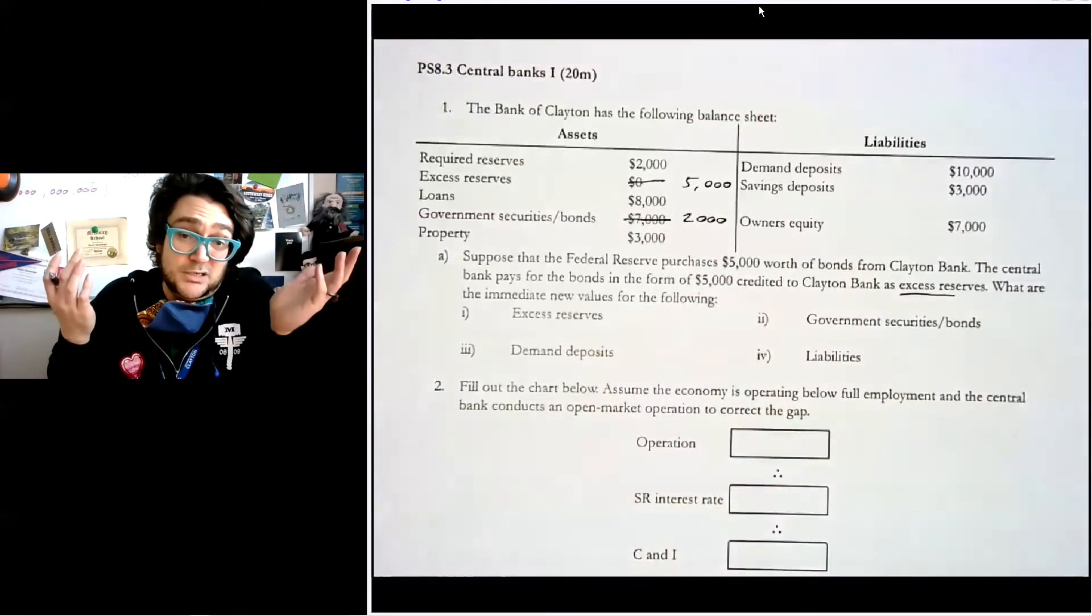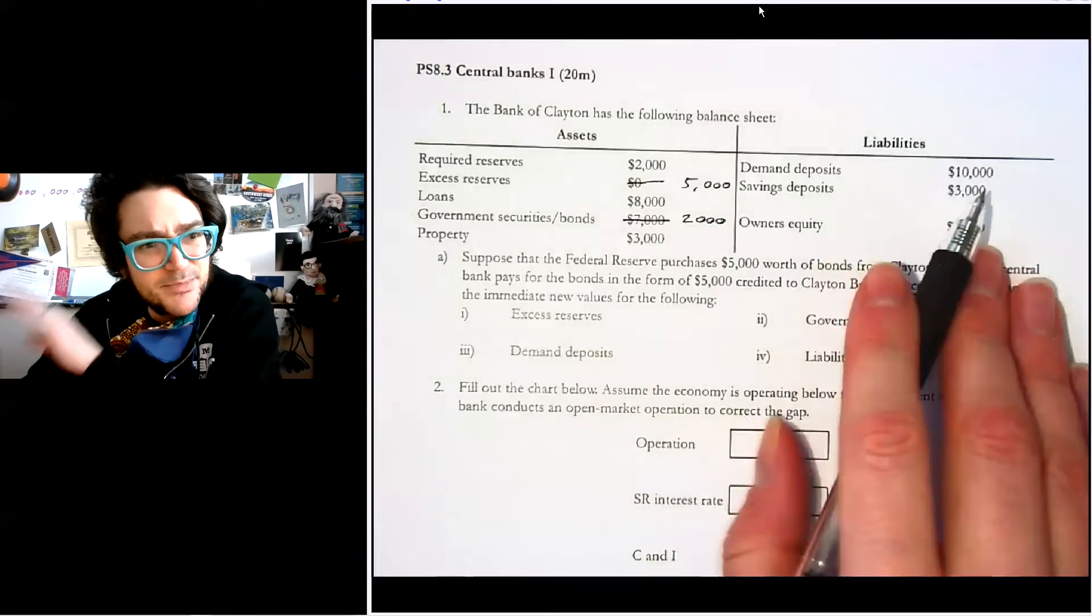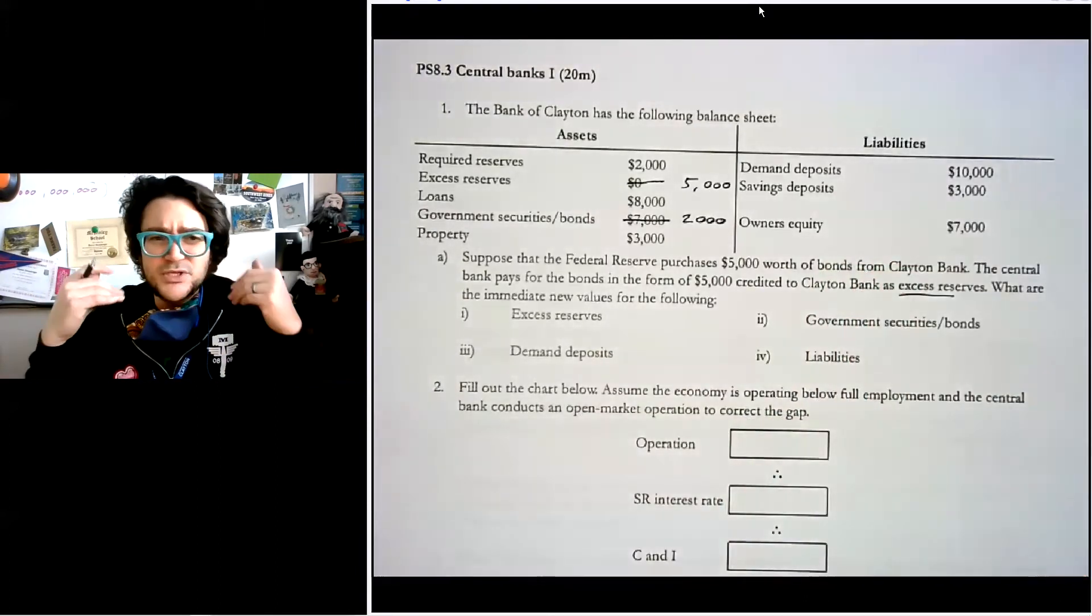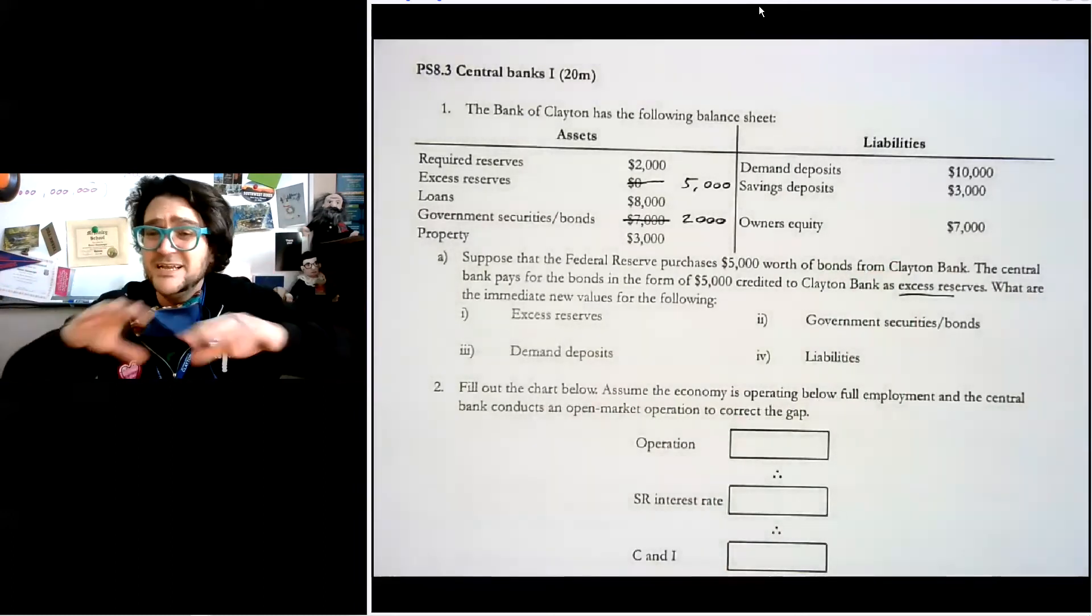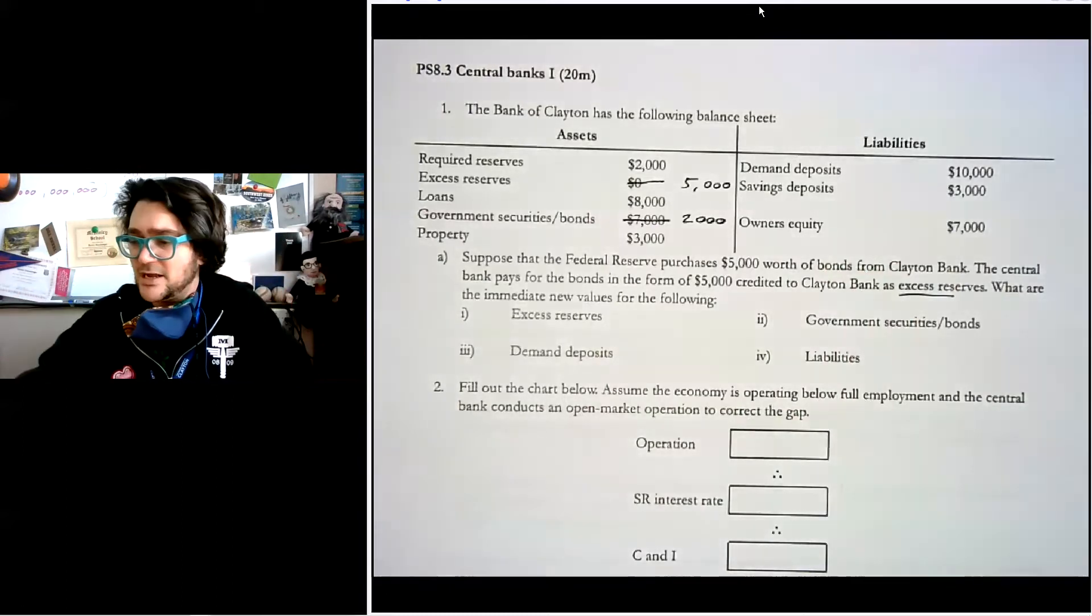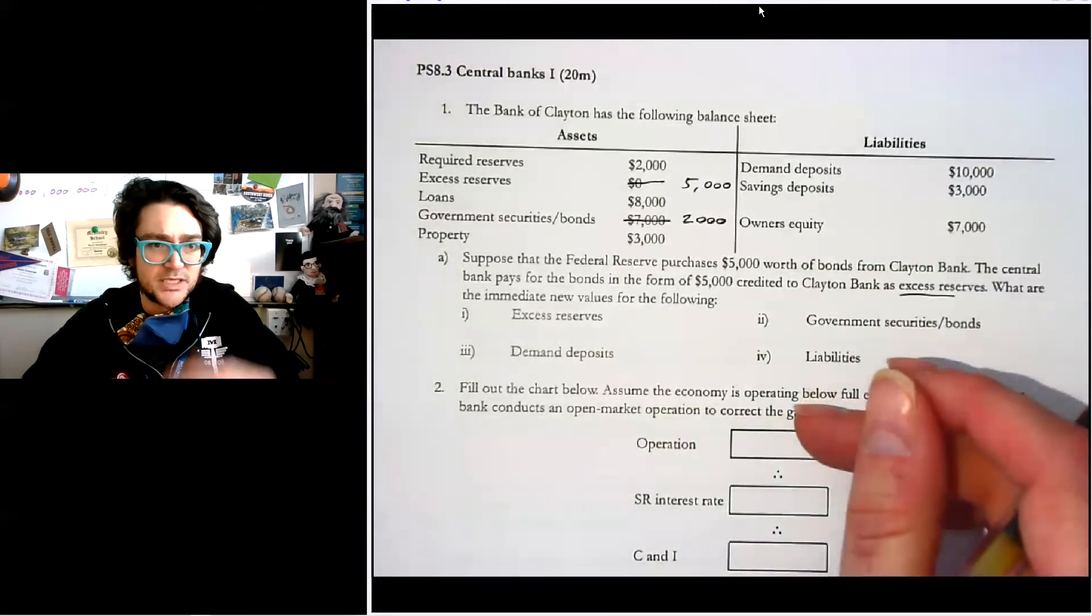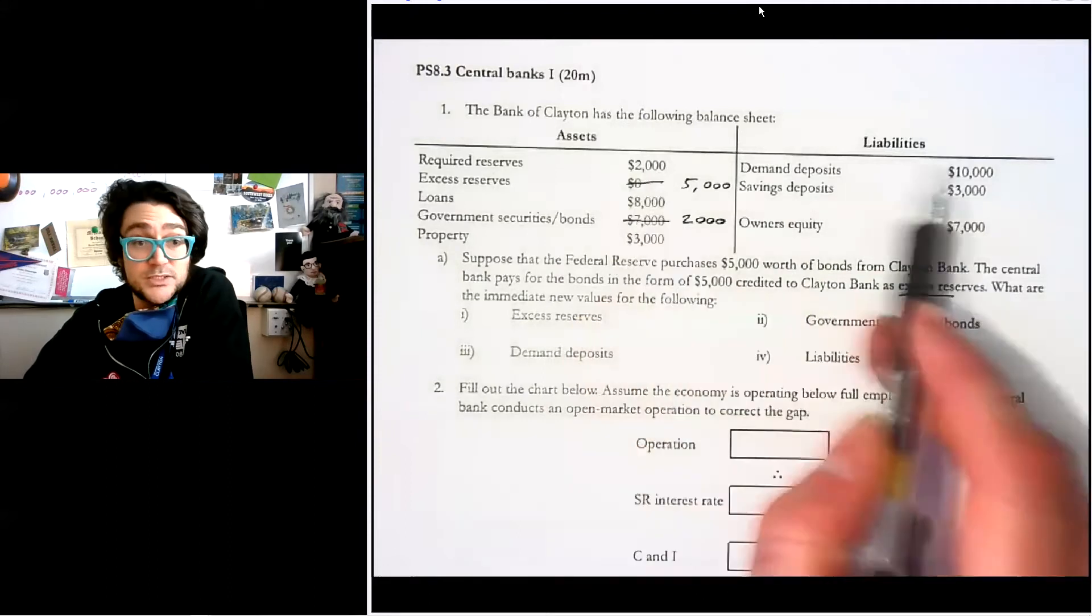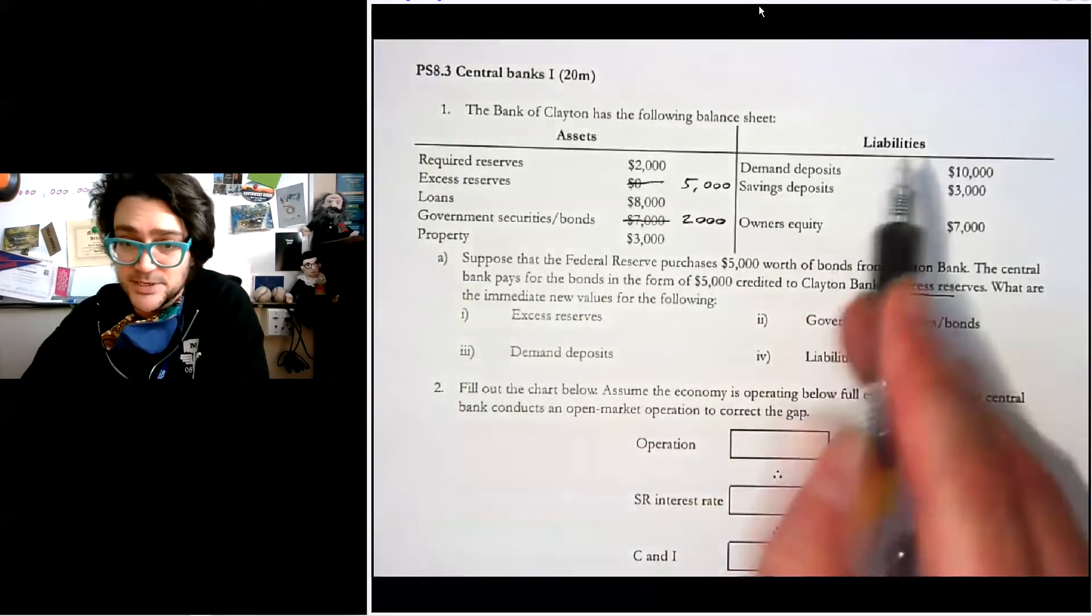Now we noticed that nothing changed on the liability side. From the perspective of ordinary Joe Schmo who's banked at Bank of Clayton their whole lives, we have no idea when they did that and it doesn't really matter. Like our bank account still shows $10,000 in it, savings account still shows $3,000. It doesn't matter. The amount that they have to keep at the Bank of Clayton in required reserves also didn't change because nothing changed in demand deposits.